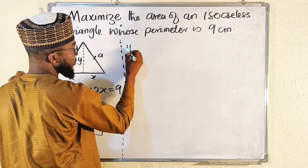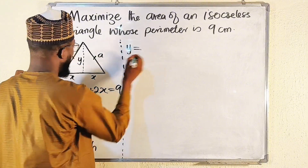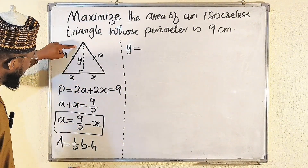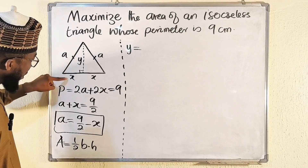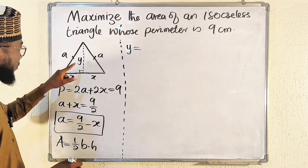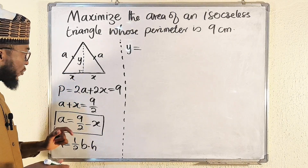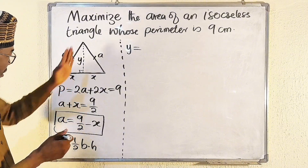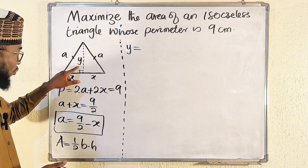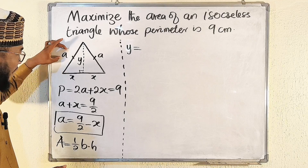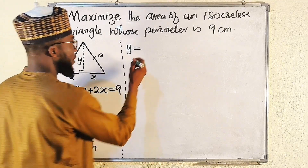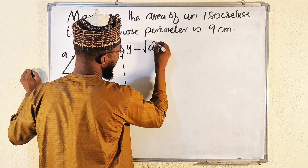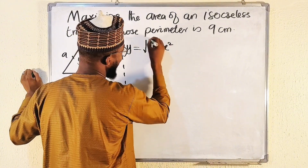If you observe, we have a right-angle triangle with hypotenuse 'a' and the other two sides y and x. To find y, we apply the Pythagorean theorem: y = √(a² − x²).